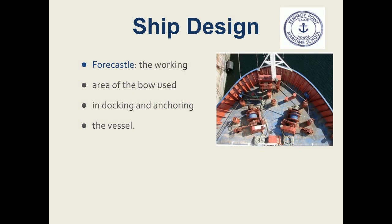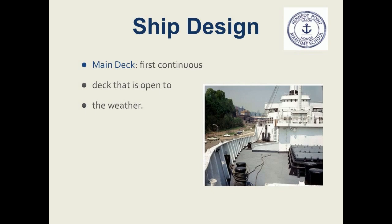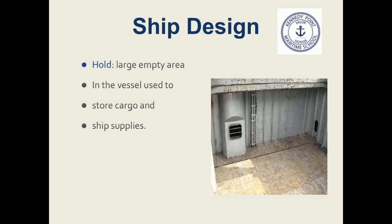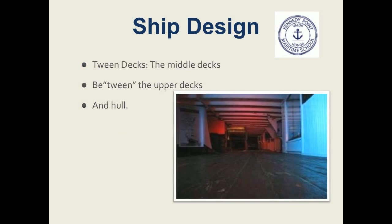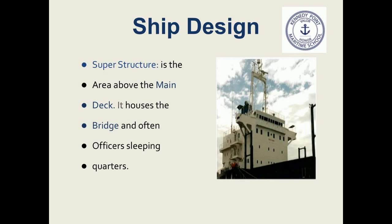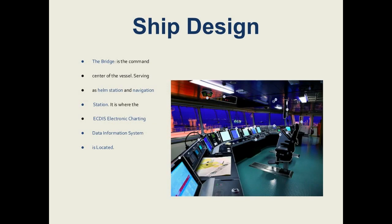The forecastle is the working area of the bow used in docking and anchoring the vessel. The main deck is the first continuous deck that is open to the weather. The hold is a large empty area in the vessel used to store cargo and ship supplies. Between decks are the middle decks between the upper decks and the hull or bilge. The superstructure is the area above the main deck. It houses the bridge and often the officers' sleeping quarters. Backup generators and battery supply to operate the ship's electrical equipment and GMDSS emergency equipment may also be located in the superstructure. The bridge is the command center of the vessel, serving as the helm station and navigation station. It is where the ECDIS — electronic chart display and information system — is located.